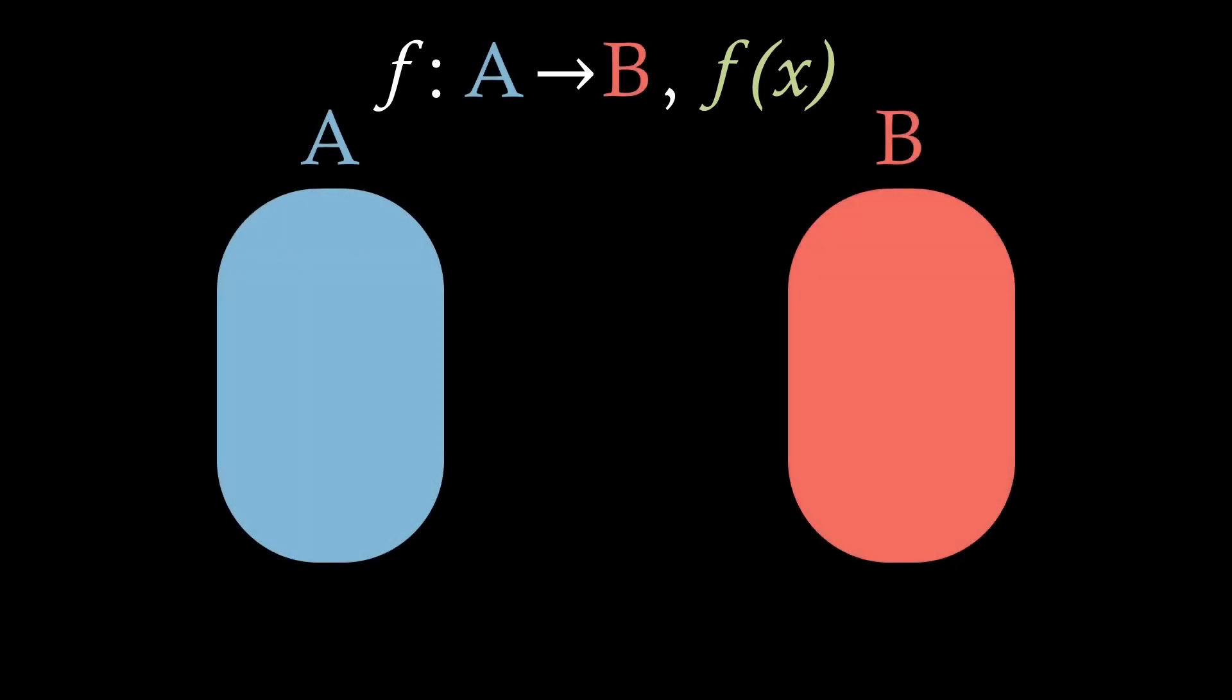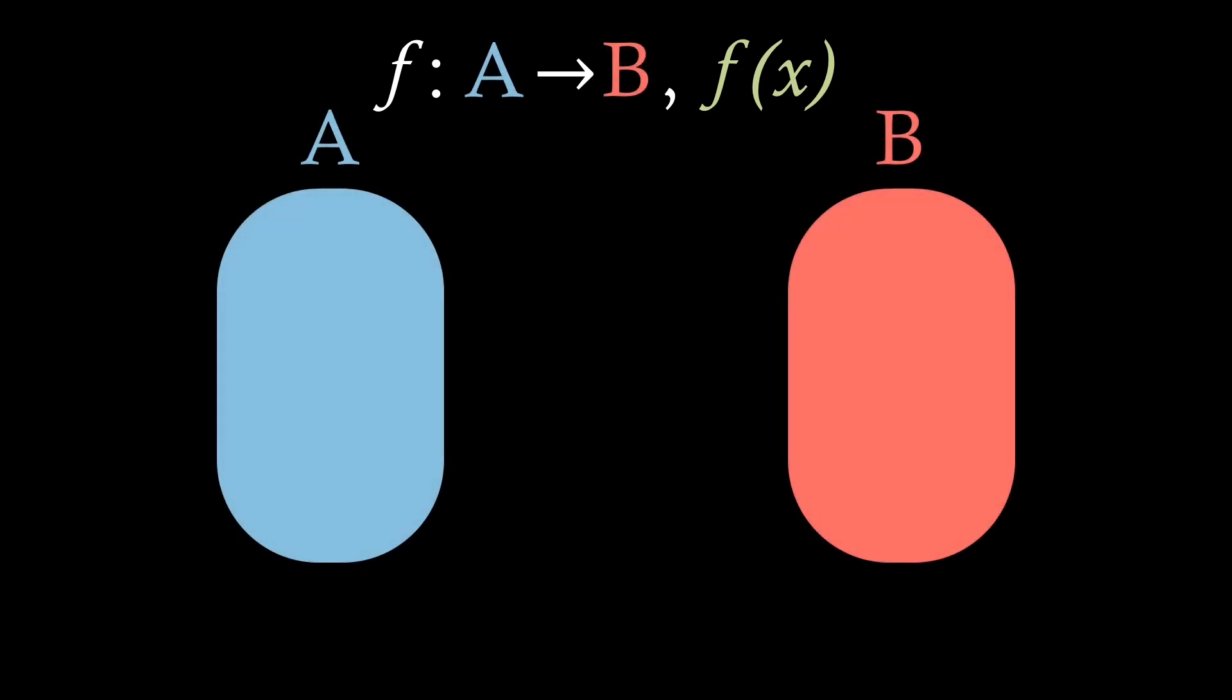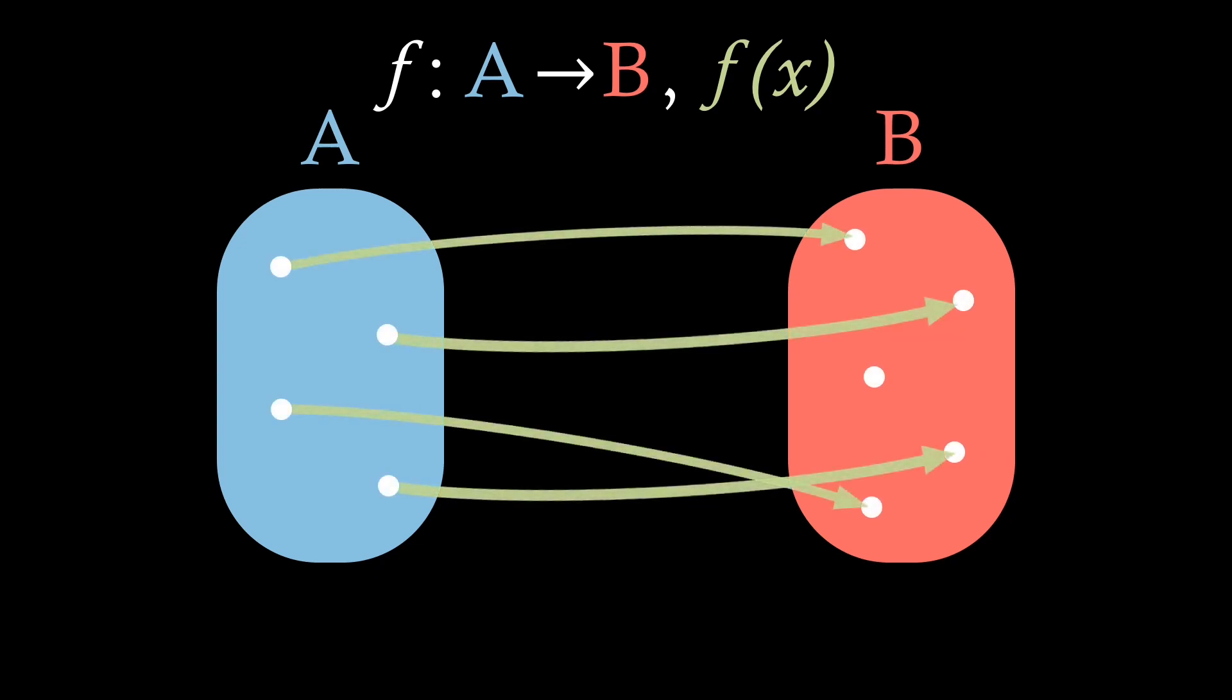Now, returning back to the diagram of our function, if we imagine the case where every single point in A is mapped to a single point in B, i.e. individual a's mapped to an individual b,